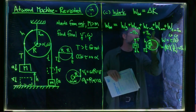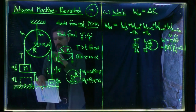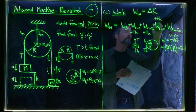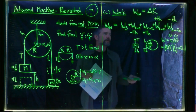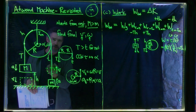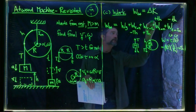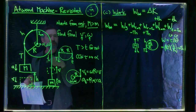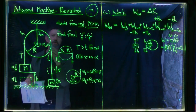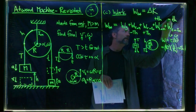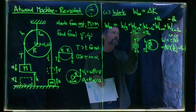Similarly, looking at the two terms involving little t: the work done by little t on little m is positive little TH (force and displacement both upward). The work done by little t as a torque on the pulley is negative little TH (torque is clockwise but angular displacement is counterclockwise — opposite directions). These two terms separately cancel out as well.